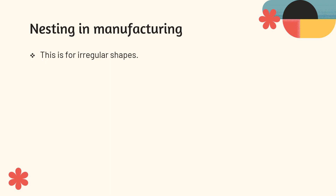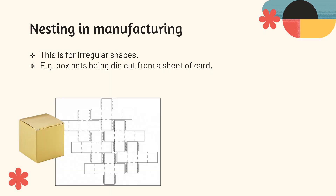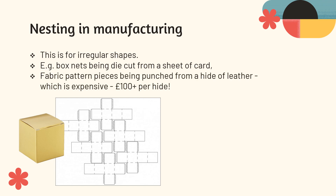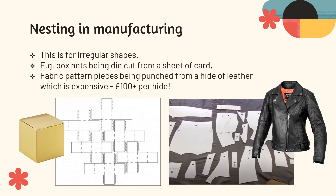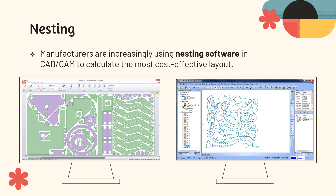If we bring this back to nesting in manufacture, we are talking about irregular shapes. For instance, box nets might be die cut from a sheet of card — these cross shapes and T-shapes with glue tabs sticking out — so we're never going to be able to tessellate them perfectly; we just need to arrange them to minimise the waste in between. Similarly, fabric pattern pieces for something like a leather jacket are punched from a hide of leather, which are incredibly expensive — 100, 200 pounds per hide — so you definitely want to minimise waste. CAD/CAM is becoming so well utilised that manufacturers are increasingly using nesting software to calculate the most cost-effective layout and just do the job for them: you tell it what pieces need to be included and it arranges them for you.